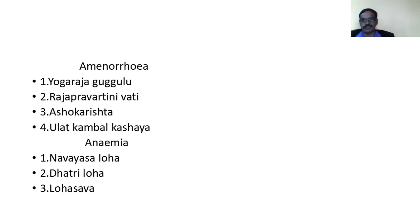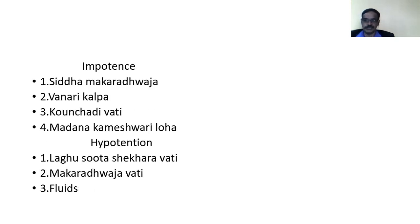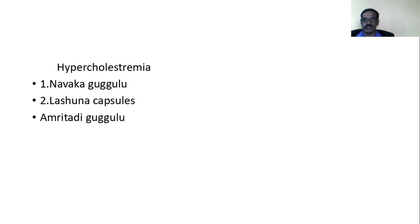For amenorrhea in hypothyroidism patients, we can use Ryogara Yugulu, Rajapravartini Vati, Ashokarishta, and Ullatakambal Kashaya. For anemia: Navayas Loha, Dhatri Loha, and Swayambhuv Loha. For impotency: Siddha Makaraja, Vanari Kalpa, Kauncha Adi Vati, and Madanakameshwari Leha. For hypotension in hypothyroidism: Lagusa Chakravati, Makaraja Vati, and plenty of fluids. For hypercholesteremia: Navaka Gugulu, Lashana Capsules, and Amritadi Gugulu.